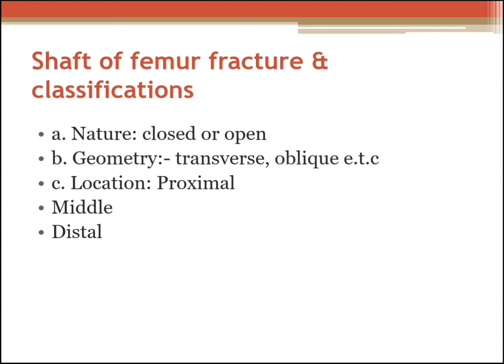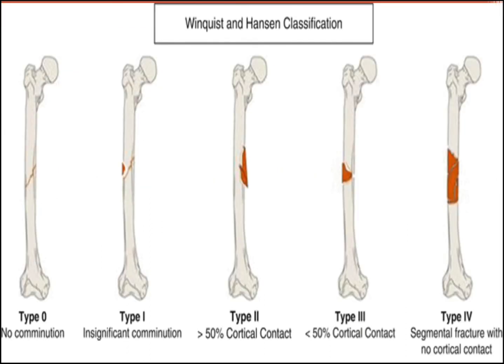Femur shaft fractures can be classified according to nature — open or closed — according to geometry — transverse, oblique, or comminuted — and by location — proximal, middle, or distal. The Winquist-Hansen classification: Type 0 is no comminution, Type 1 is insignificant comminution, Type 2 is greater than 50 percent cortical contact, Type 3 is less than 50 percent cortical contact, and Type 4 is a segmental fracture with no cortical contact, as seen in the diagram.